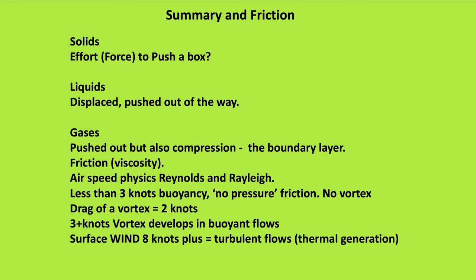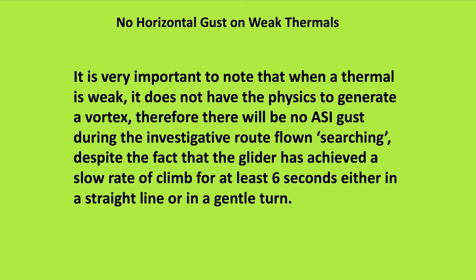The surface wind at 8 knots-plus generates turbulent flows and increases thermal generation from both humidity and temperature conduction from the ground into the air. It's important that weak thermals without a vortex have no outward gust — there is no vortex outward gust. When it's weak, it does not have the physics to generate a vortex, so there will be no airspeed gust during the investigative route flown while searching, despite the glider achieving a slow rate of climb for at least 6 seconds. Your real pointer for a weak thermal — as to whether you're looking for a vortex or not — is fluctuations on the airspeed indicator. If it fluctuates, there may be a vortex there. If it doesn't, there certainly isn't one.